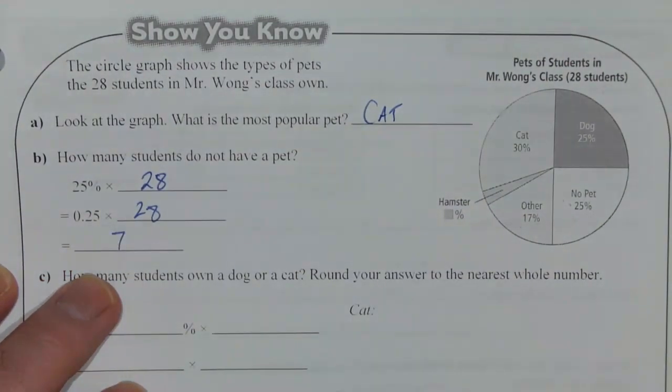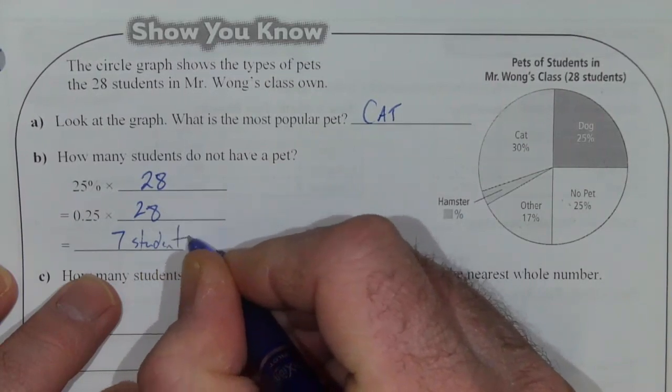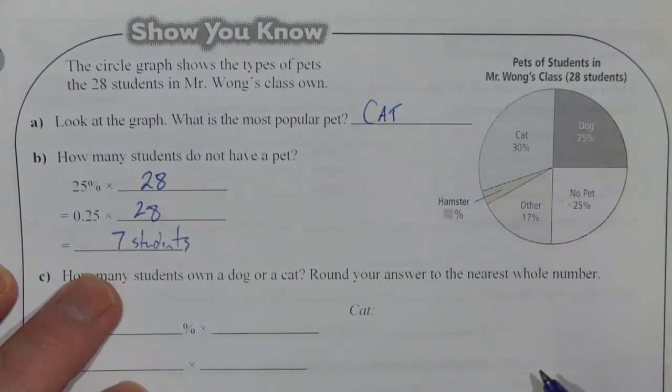which works out to be 7 students. So 7 students in this class have no pet.